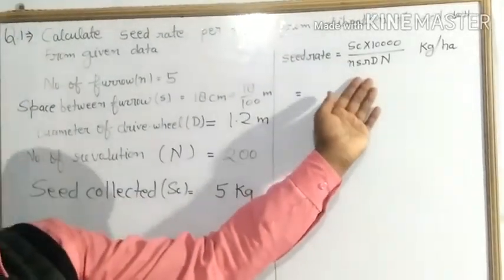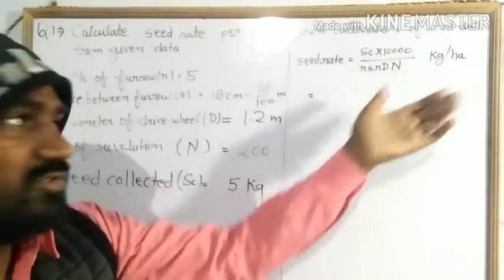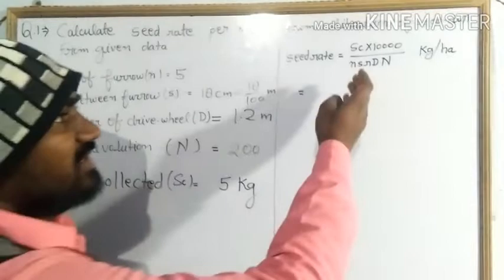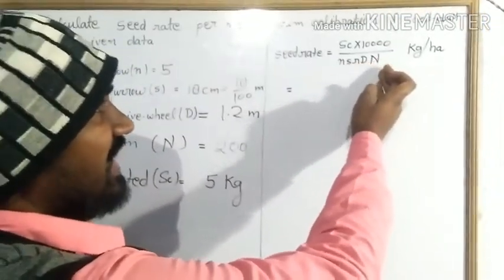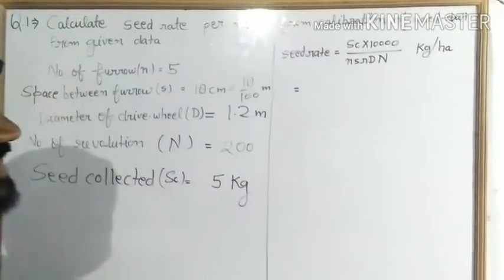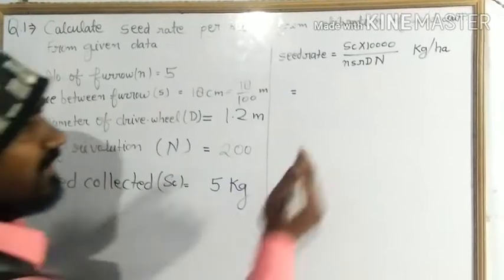Here this is the formula of seed rate which is s. Now we will put value in this formula where s is equal to 5.